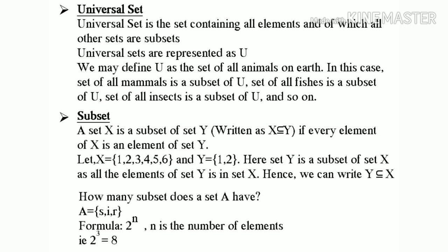How many subsets does a set A have? A equal to {S, I, R}. Formula: 2 power N, where N is the number of elements. That is 2 cubed equal to 8.